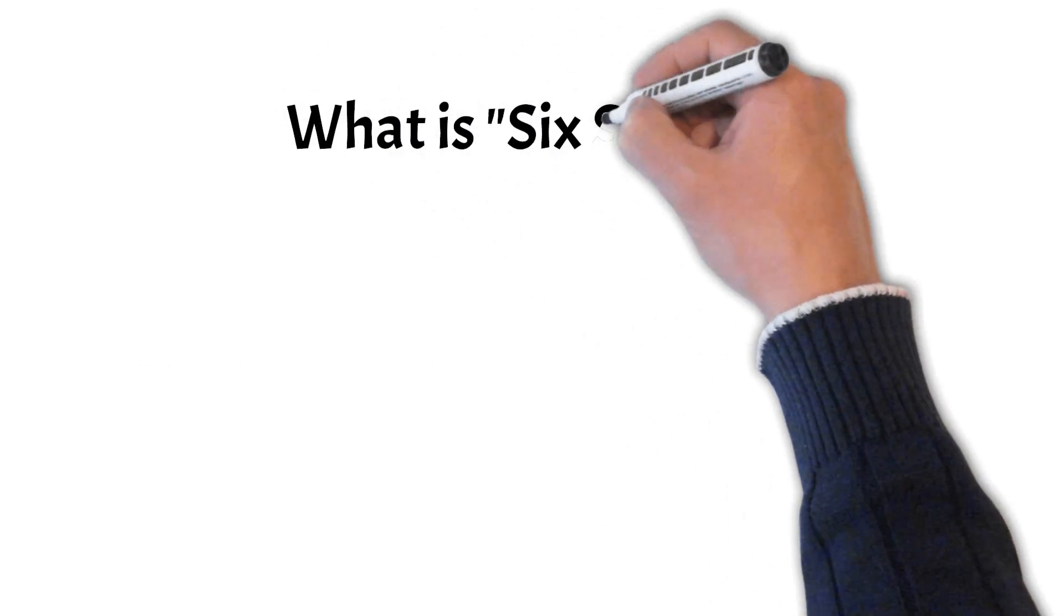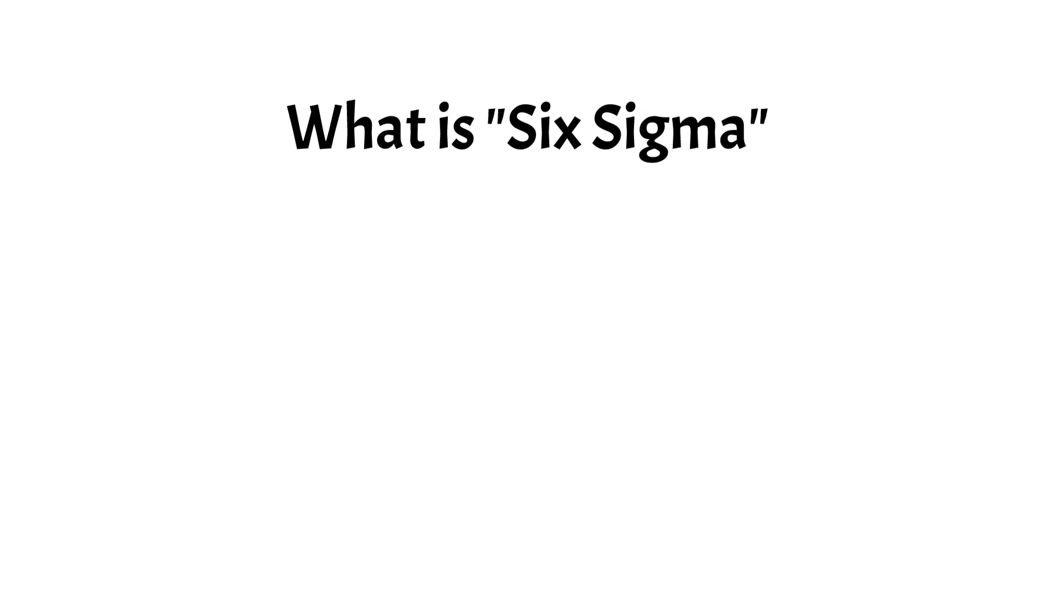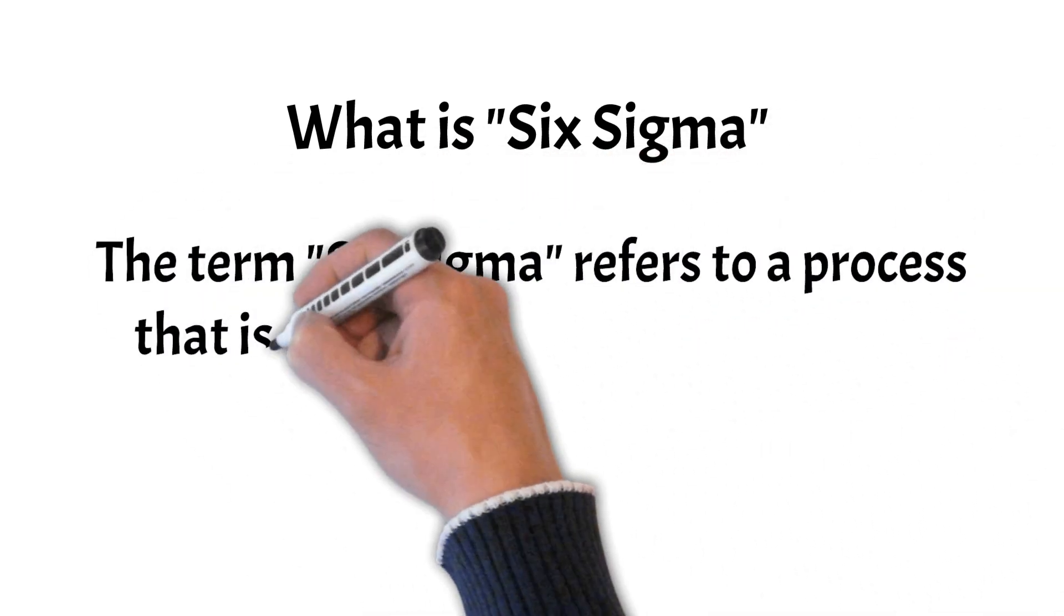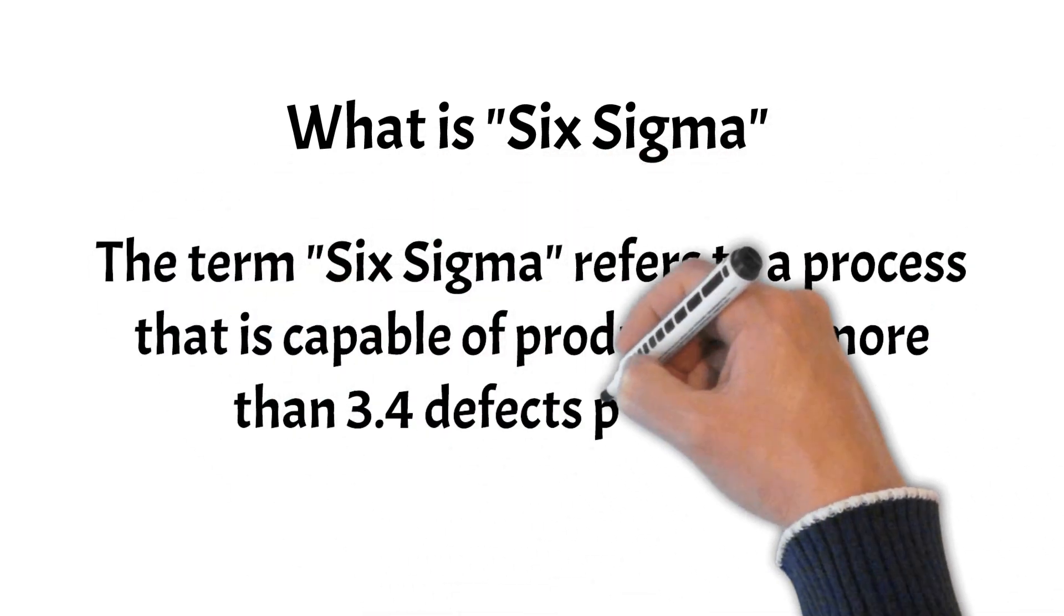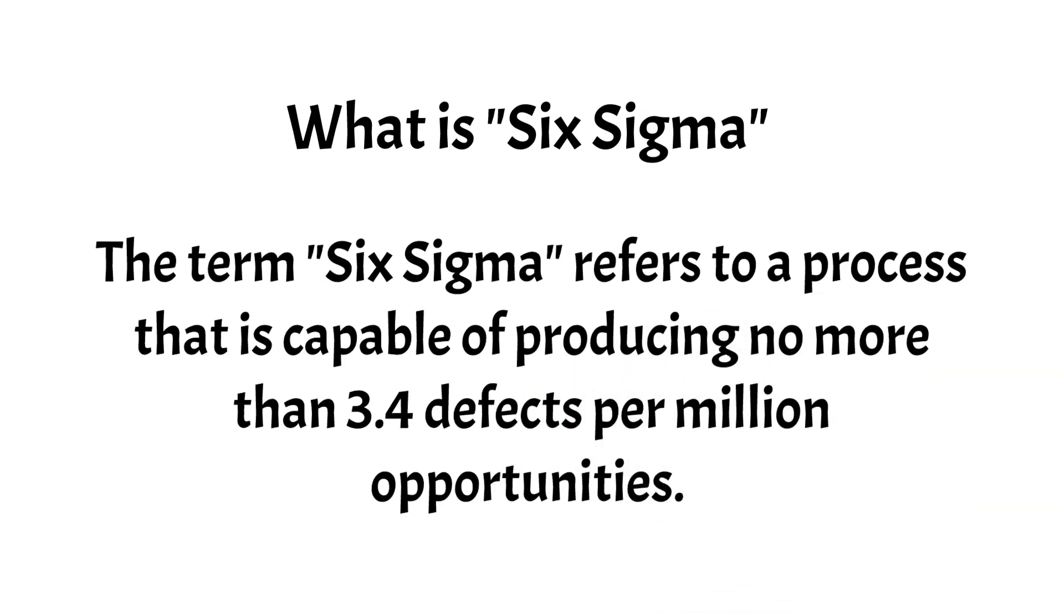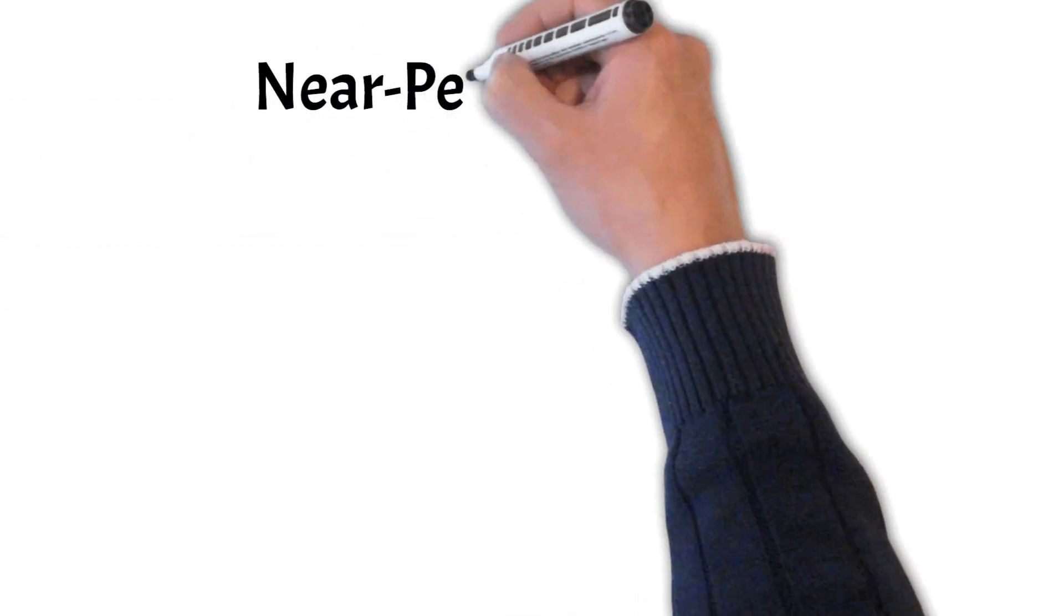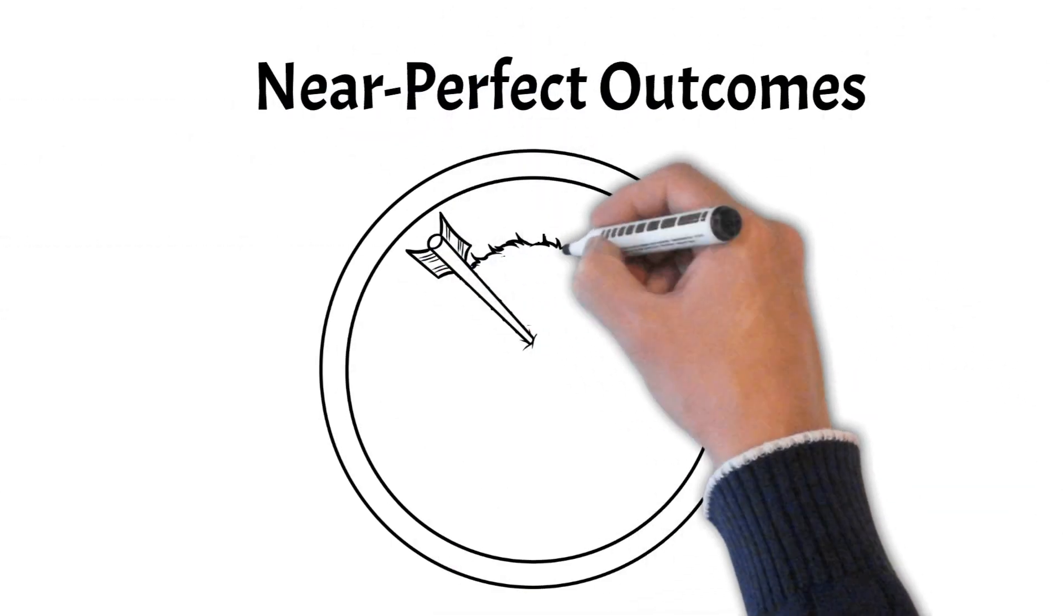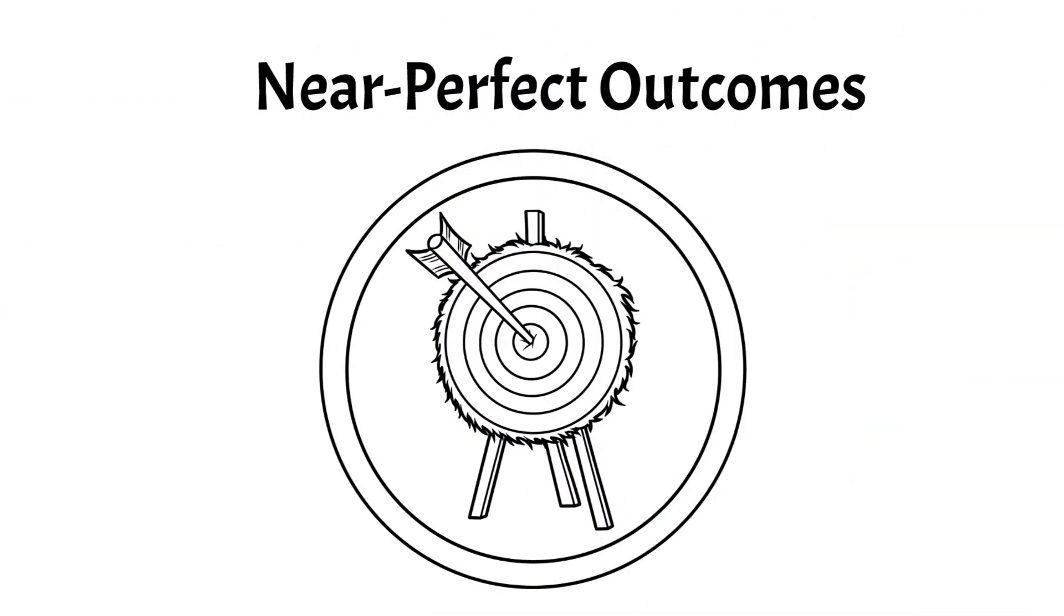The term Six Sigma is very explicit and refers to a process capable of producing no more than 3.4 defects per million opportunities. This means the process is expected to deliver near-perfect outcomes. While this is quite ambitious, it may not be an appropriate target for all processes.